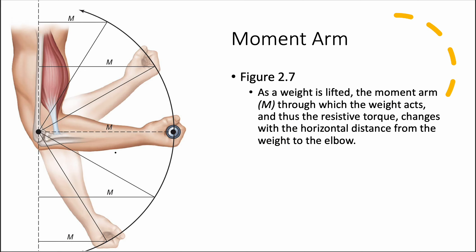Going through each motion purposefully is key. When you cheat the rep, it doesn't allow the muscle to be used in its highest state. This applies to pull-ups as well — people who don't let themselves all the way back down change the complexity of the actual motion. The same premise applies: full range of motion is needed to get the full benefit.